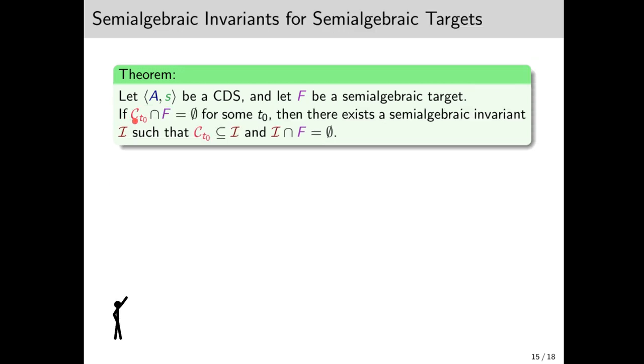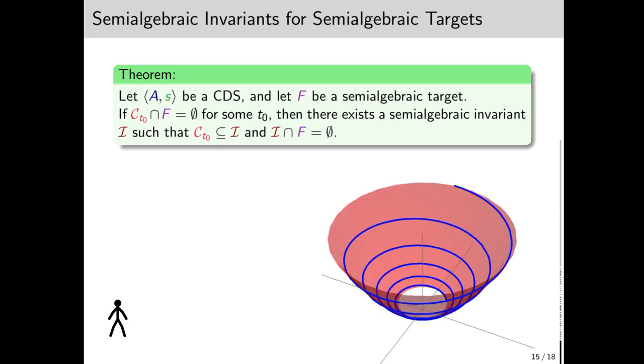If CT0 is disjoined from a semi-algebraic target, then we can also find a semi-algebraic invariant that is disjoined from it. Note, though, that this invariant is still only an eventual invariant. How do we construct the semi-algebraic invariant? Well, let's look at CT0. The reason it's not semi-algebraic is the curvature of the sides, which are defined by exponential functions and some polynomials.